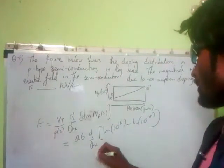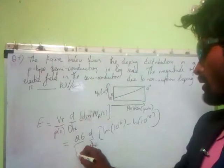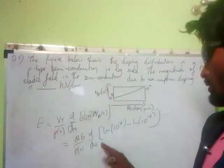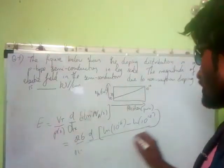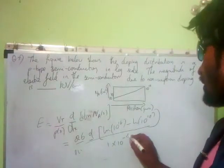The whole divided by P of x, which I can express as the whole thing divided by 1 times 10 to the power minus 4.